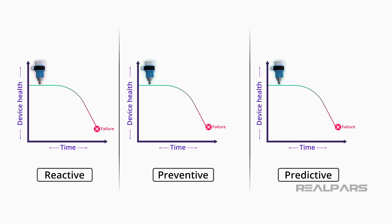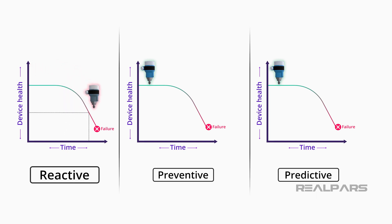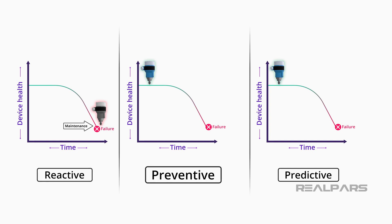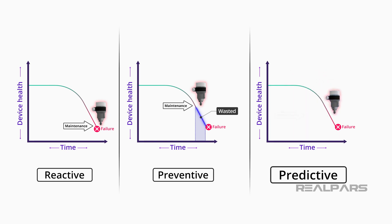In summary, we have three types of maintenance: reactive, preventive, and predictive. Reactive maintenance is when you wait until the device fails and then fix it, which causes your production line to stop and results in financial losses. To prevent this, you can use preventive maintenance — performing regular checks before the device fails. But the challenge is that by maintaining early, you waste usable device life. With predictive maintenance, you predict when the device fails and schedule maintenance right before that, minimizing downtime and maximizing device lifetime.